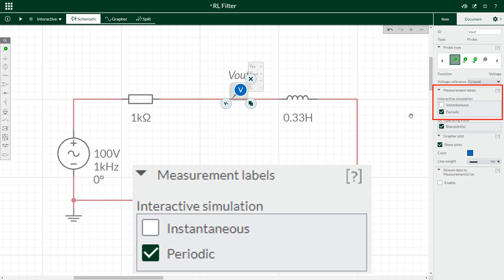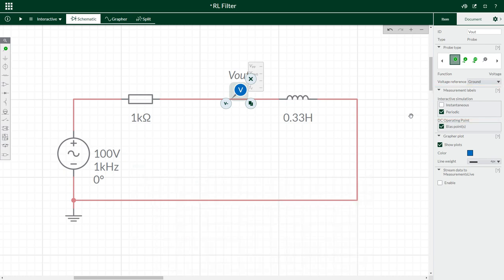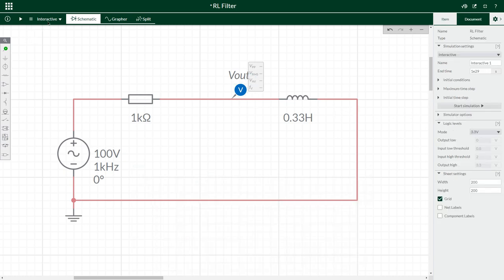For this probe, turn off instantaneous and turn on periodic, because AC voltages change too fast to see their instantaneous value. So a periodic probe gives us RMS and peak-to-peak values. Choose interactive simulation. Click play or run simulation.